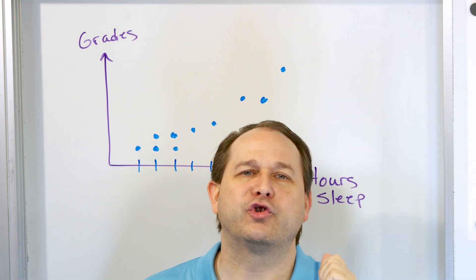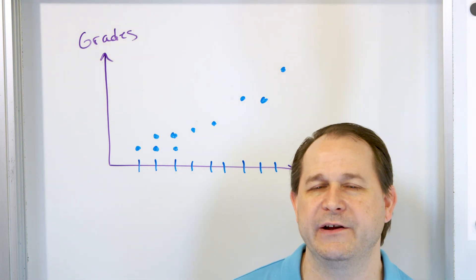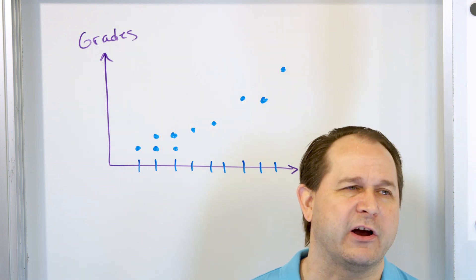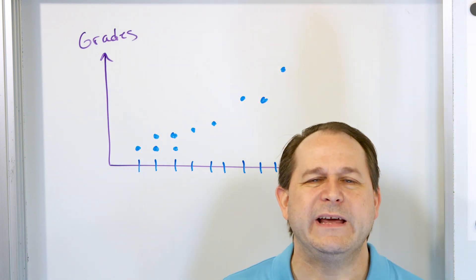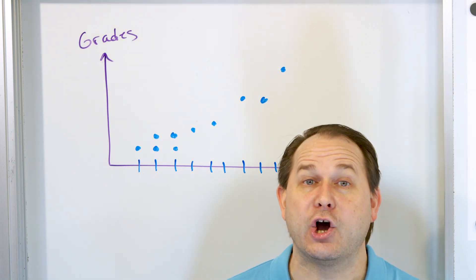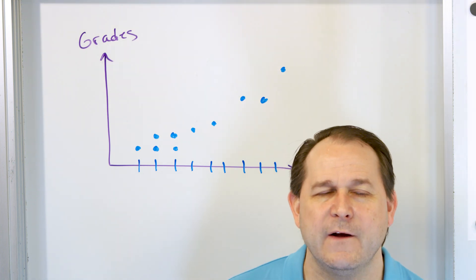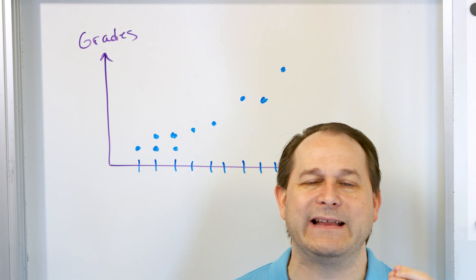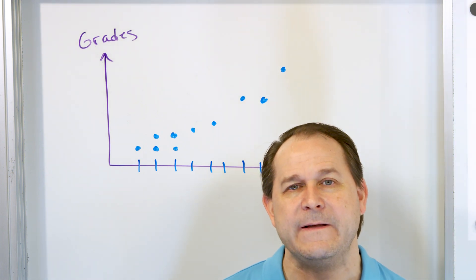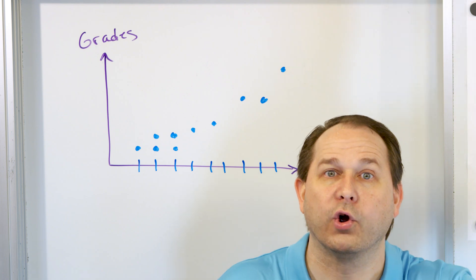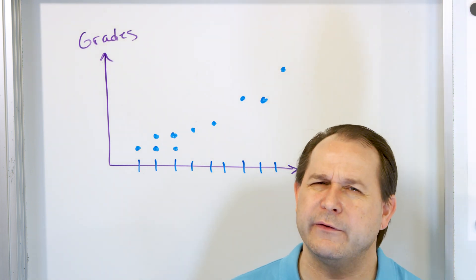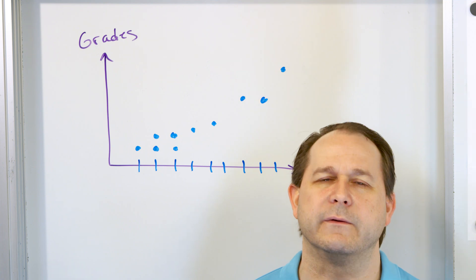So that's called correlation — one of the most important definitions you'll learn in math. When you read scientific papers, we'll talk about whether data is correlated. When we get into more advanced math, we'll calculate something called the correlation coefficient, which is a number that tells you how correlated the data is. The higher the number, the more correlated it is; the lower the number, the less correlated it is.